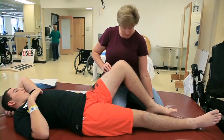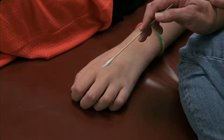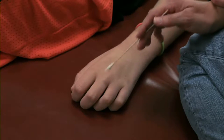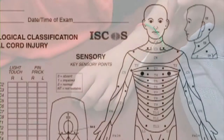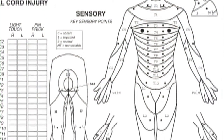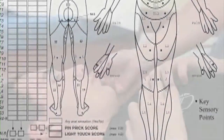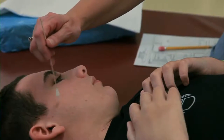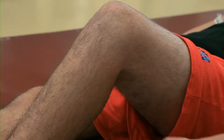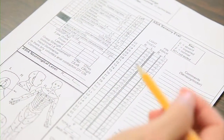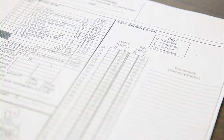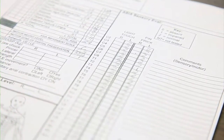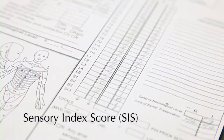To determine your loved one's ASIA ISCOS scores, the person giving the exam tests the patient's sensory and motor abilities and limitations. He or she tests 28 points on both sides of the body to determine the sensation the patient can feel, each with light touch and a pinprick. The patient's response is recorded on a three-point scale — zero, one, or two — for a total of 112. This total is called the Sensory Index Score, or SIS.